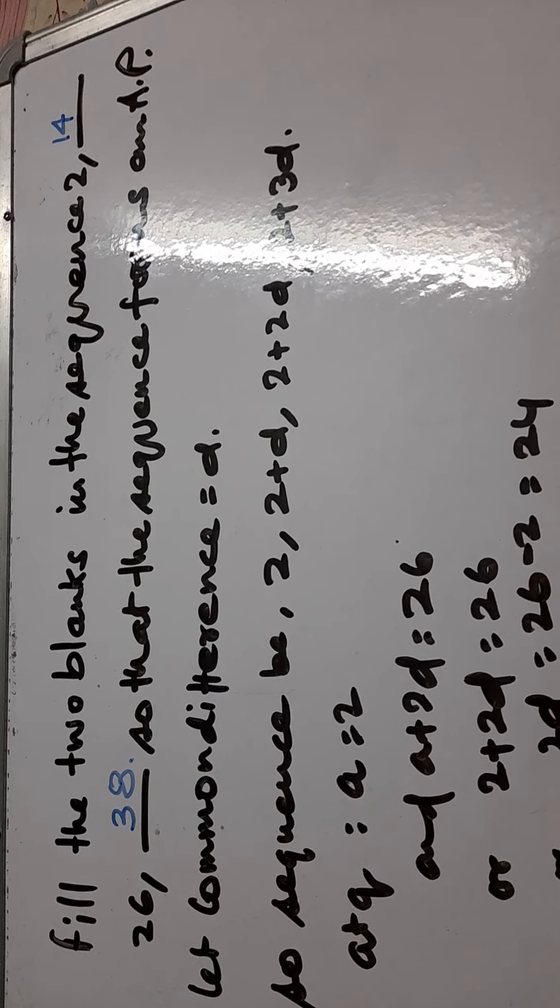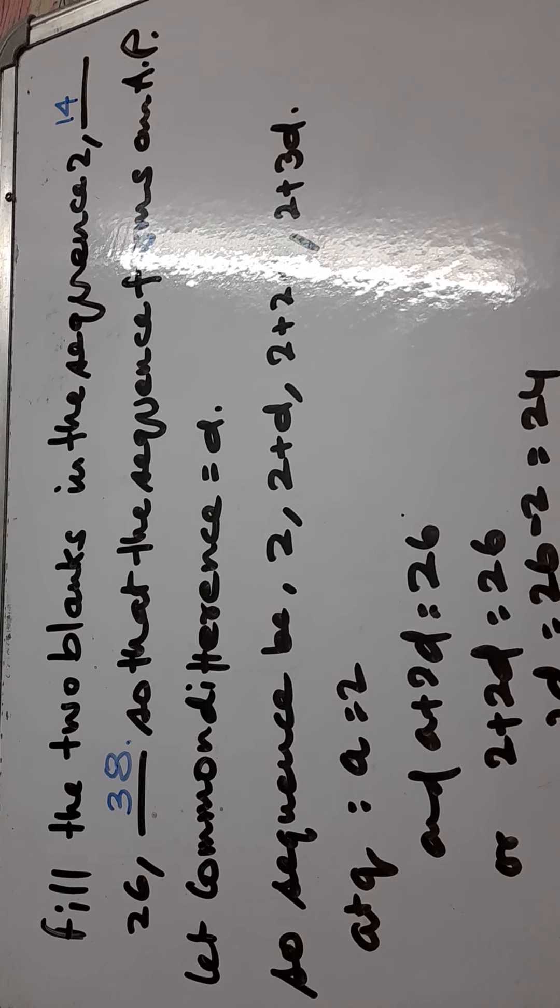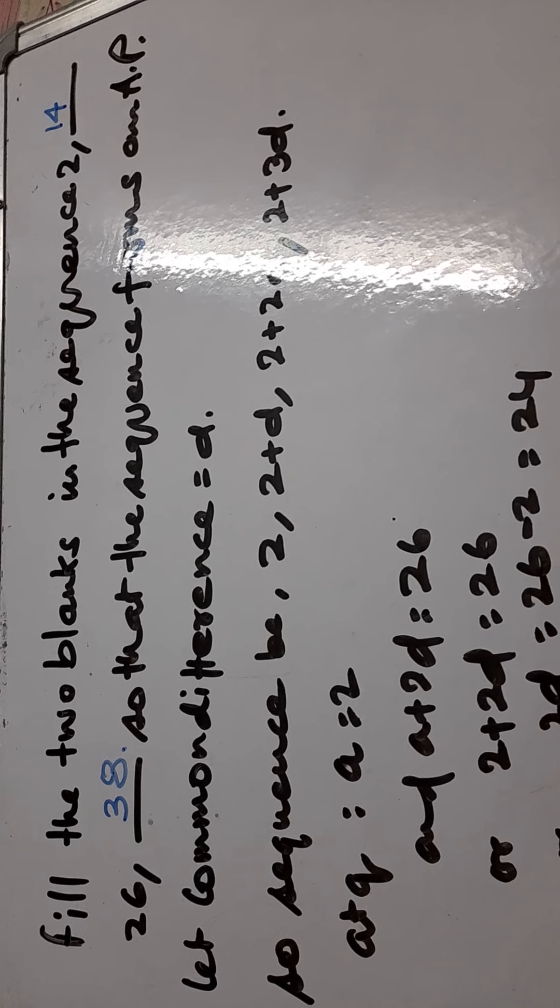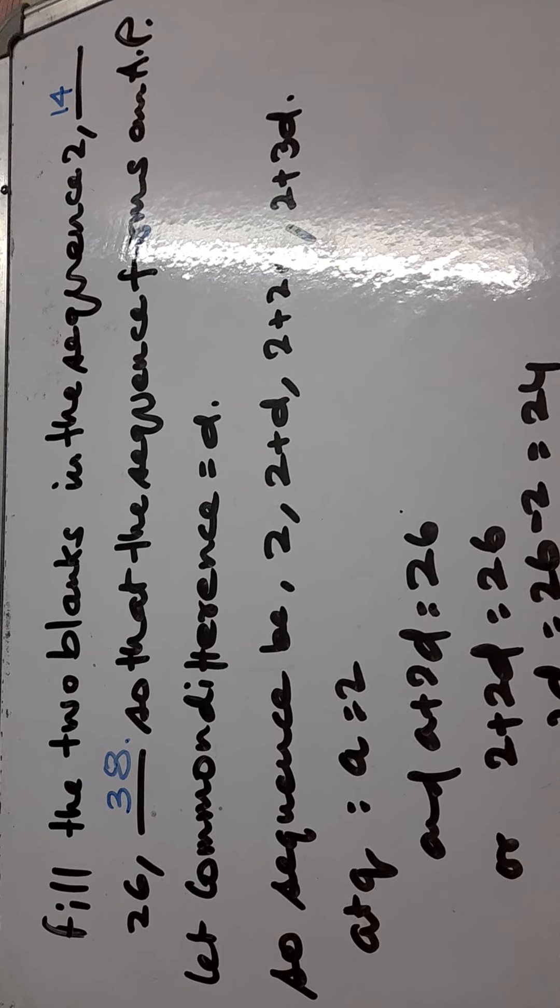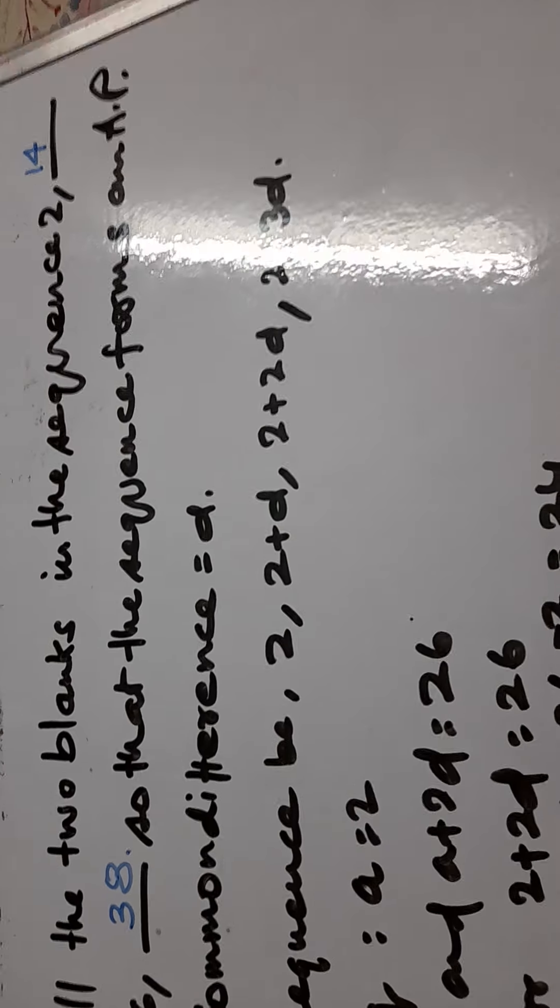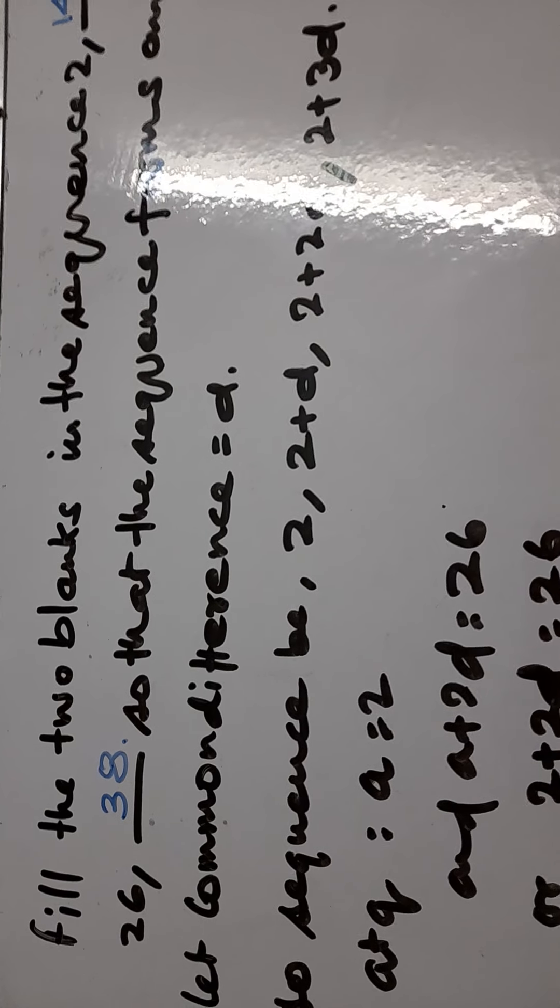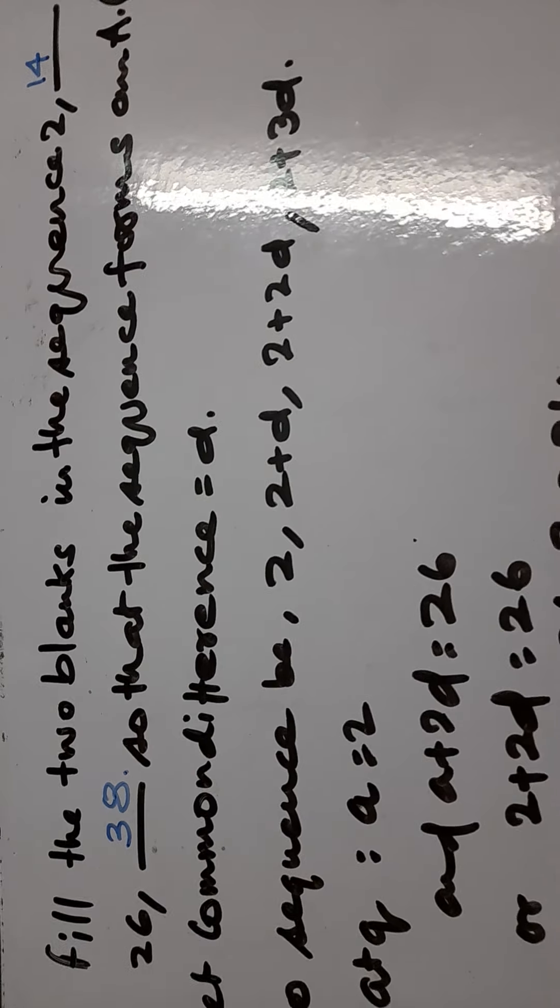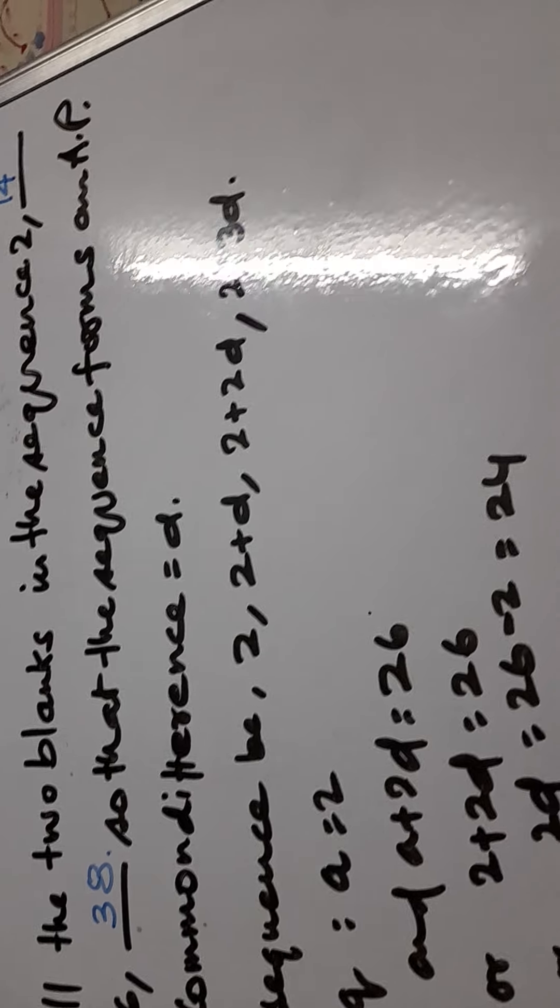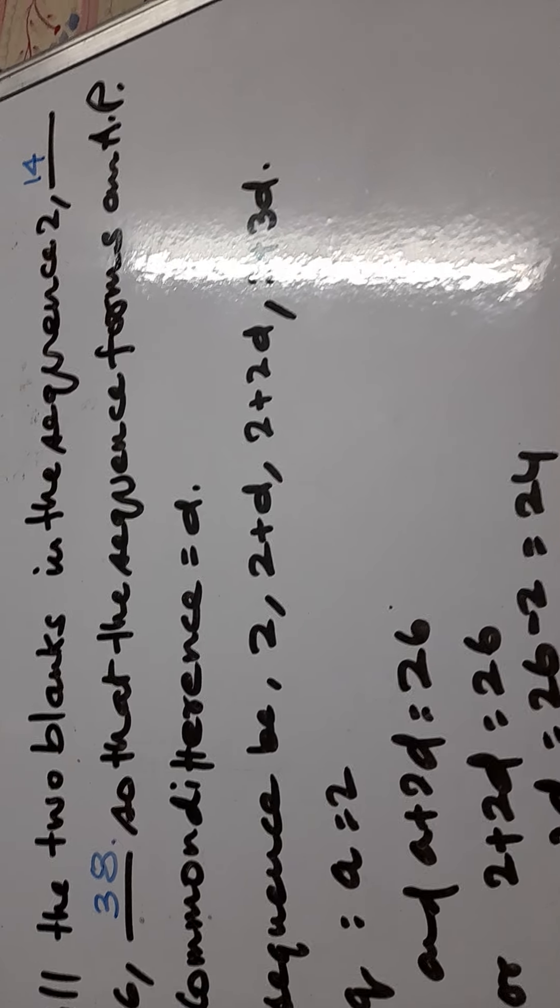One another question which is before you. The question is fill in the two blanks in the sequence 2 dash 26 dash so that the sequence forms an AP. Your solution is here. Let common difference be D. So the sequence will be 2, 2 plus D, 2 plus 2D and 2 plus 3D as it is in AP.